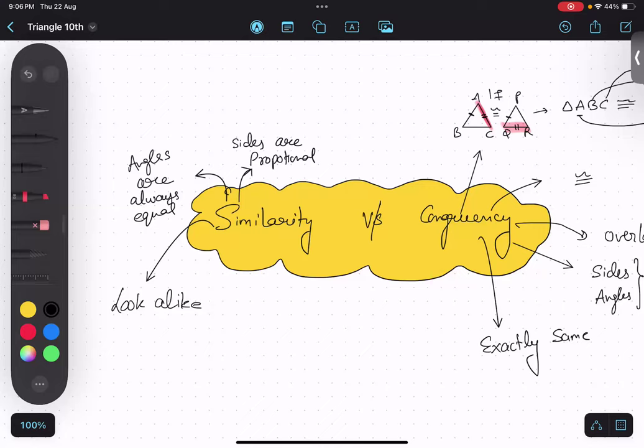In similarity, angles are always equal, just the way it is in congruency. But sides are proportional. Sides can be equal also. In that case, what is the proportion? What is the ratio? 1 is to 1. Very good. In that case, the ratio is 1 is to 1.